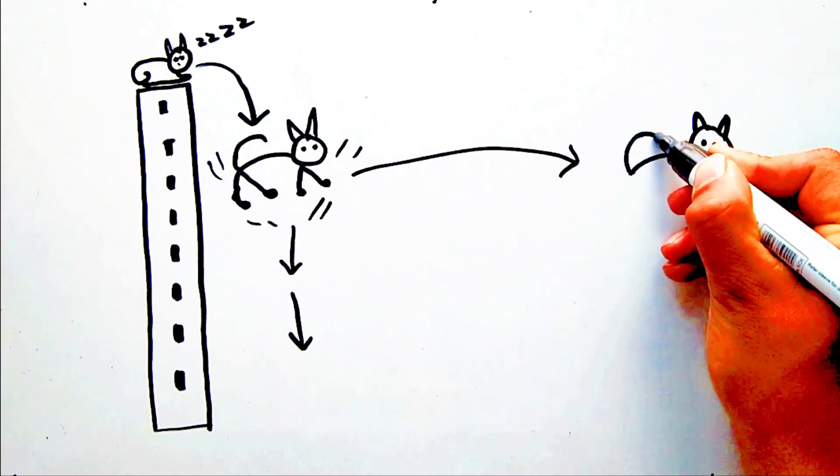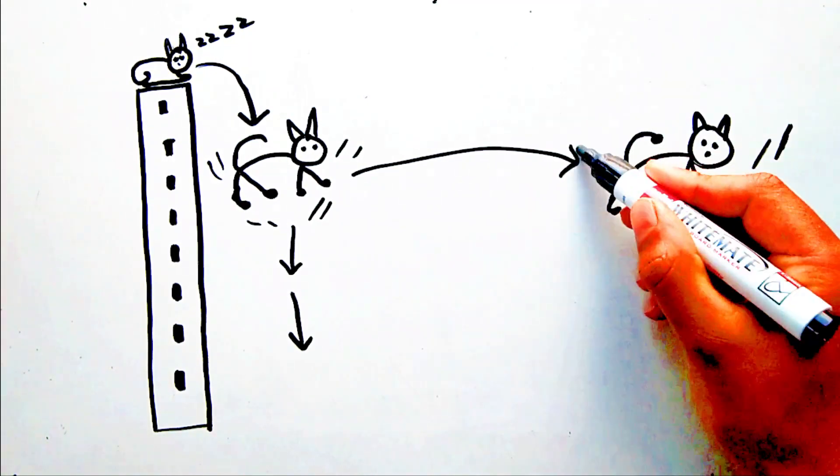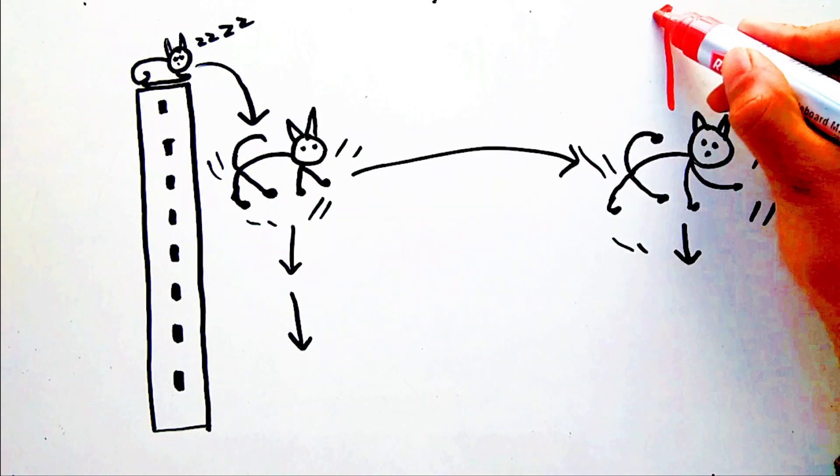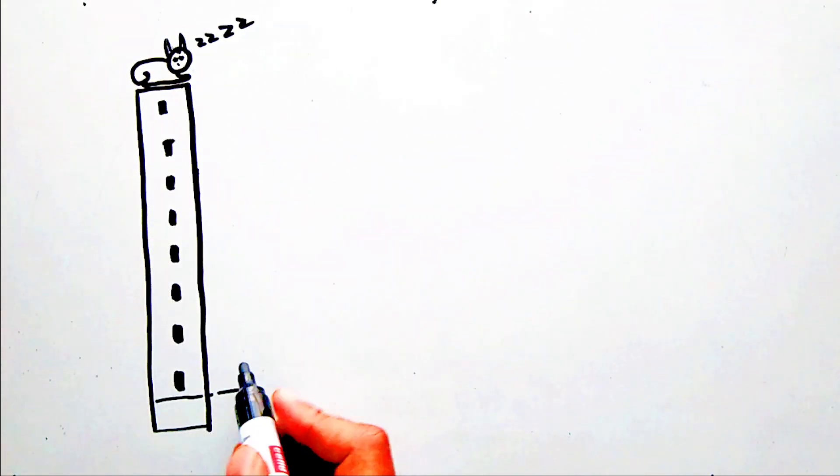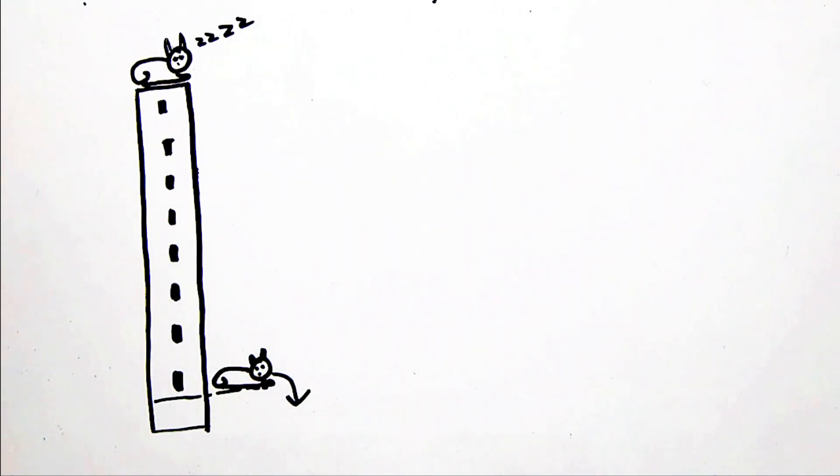As a cat falls, the force of air drag that pushes upward on the cat increases. If the fall is from the sill onto the floor, the air drag is never very much.